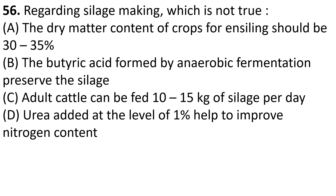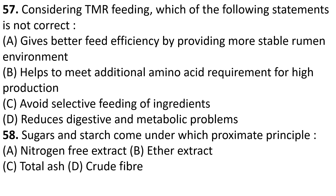Regarding silage making, which is not true? The dry matter content of crops for ensiling should be 30 to 35%. The butyric acid formed by anaerobic fermentation preserves the silage. Adult cattle can be fed 10 to 15 kg of silage per day. Urea added at the level of 1% helps to improve nitrogen content. Option B is not true: butyric acid formed by anaerobic fermentation does not preserve the silage.